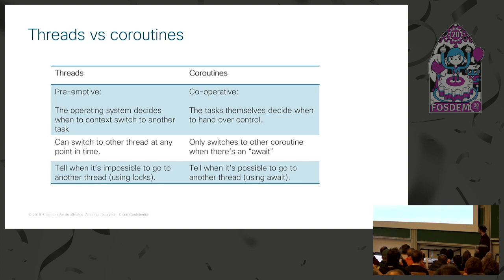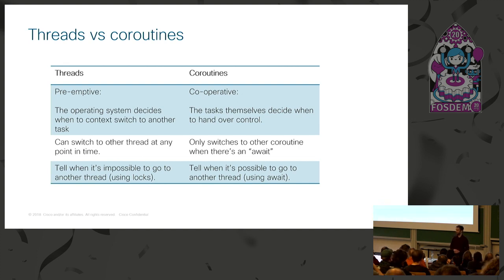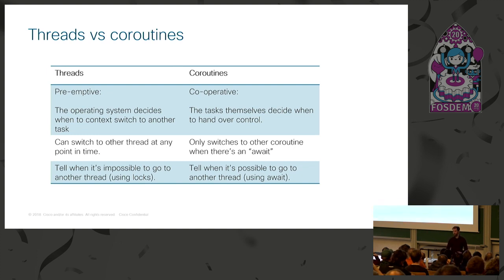With threading there's a high chance things will go wrong and break in production. With asyncIO it's easier to get things right.